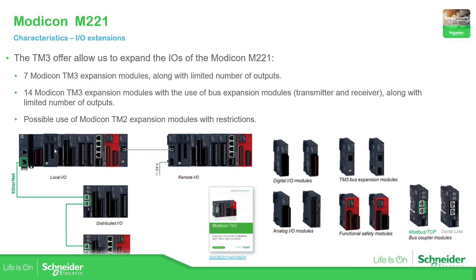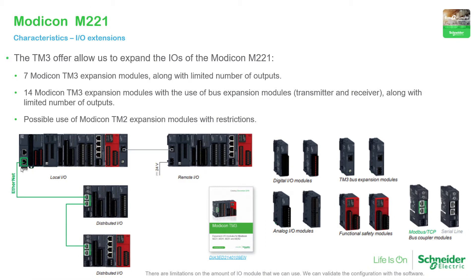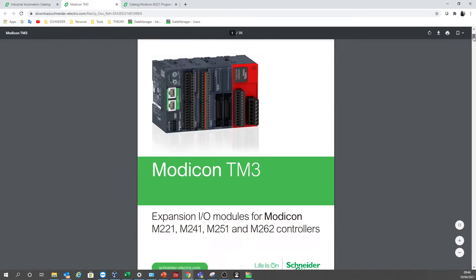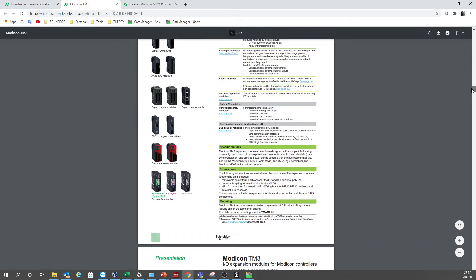The TM3 modules are placed on the right side of the PLC, and you can connect up to seven. You can then use a transmitter and receiver to extend from 7 to 14, depending on the actual PLC model. We can also use Ethernet or Modbus serial to extend using the bus coupler. More information about TM3 models is available at se.com; navigate to PLCs and all controllers, then select the Modicon M221 to see the PLC catalog and TM3 catalog for the complete expansion solution.